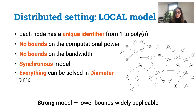All the results presented in this talk hold in the local model of distributed computing. In this model we have a network that is modeled by a graph where nodes represent computing entities and edges communication links. We will denote with n the number of nodes in the graph and with delta the maximum degree. We assume that messages can be arbitrarily large and we do not restrict the local computation. Hence this is a very strong model, and if we prove lower bounds in this model then they hold in weaker models as well.